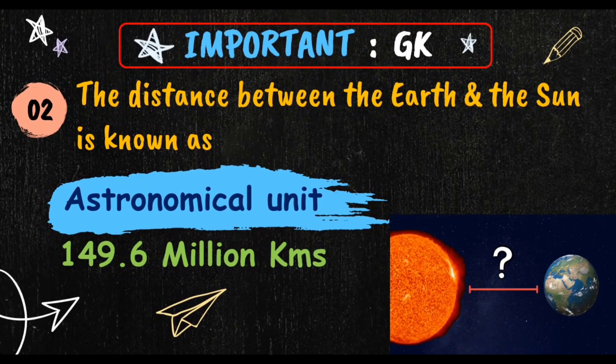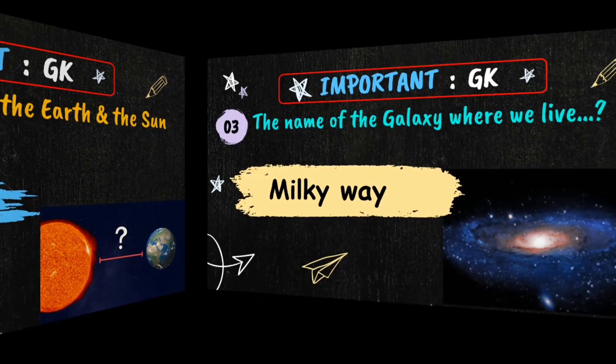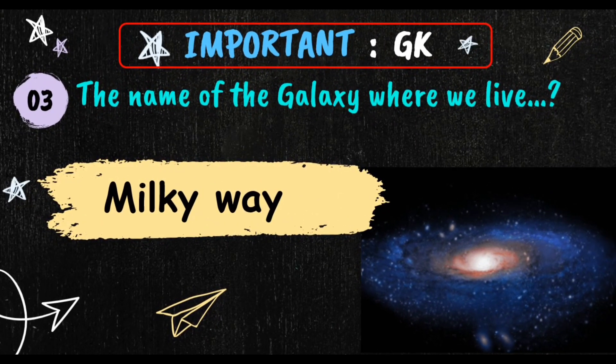The distance between the earth and the sun is known as astronomical unit. It is approximately 93 million miles, or in other words, we can say 150 million kilometers.